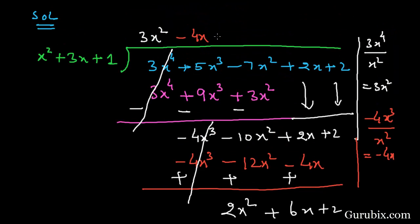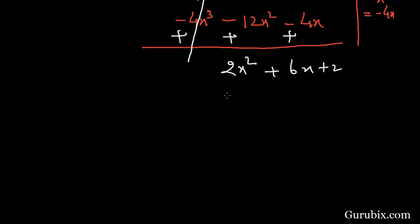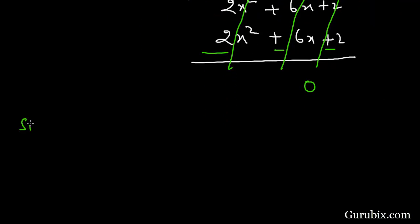The next term in the quotient is 2. If we multiply 2 with x squared plus 3x plus 1, we have 2x squared plus 6x plus 2. Now we shall change the sign of these terms, then all these terms will be cancelled and the remainder is 0.